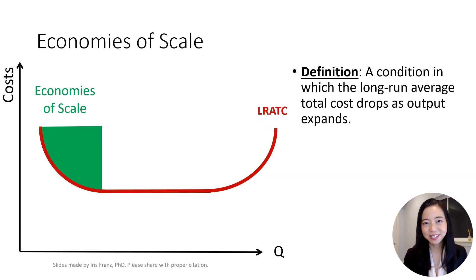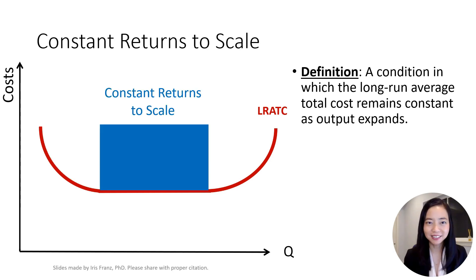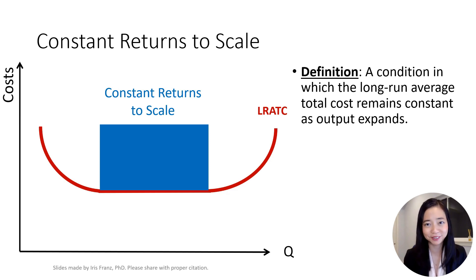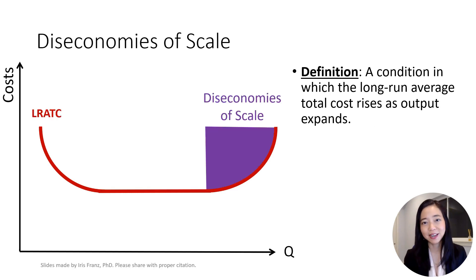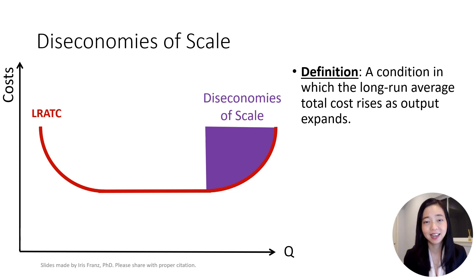Economies of scale occurs when the average total cost drops while the firm's output expands. Constant returns to scale is a condition where the long-run average total cost remains the same as the output expands. Diseconomies of scale is a condition where the long-run average total cost rises as the output expands.